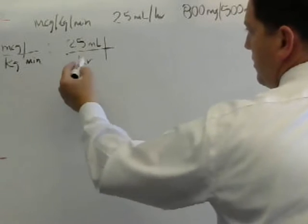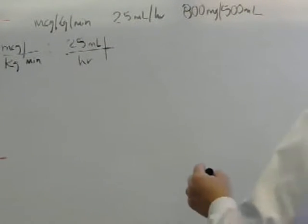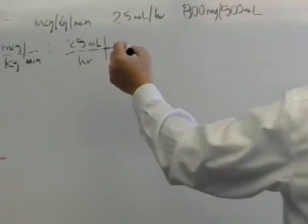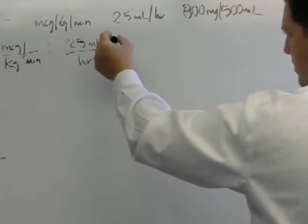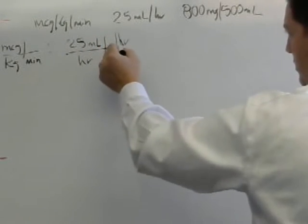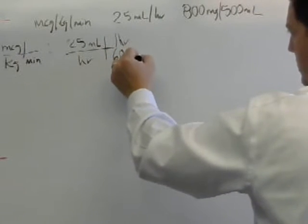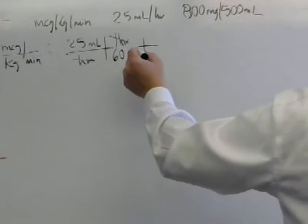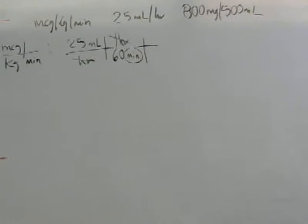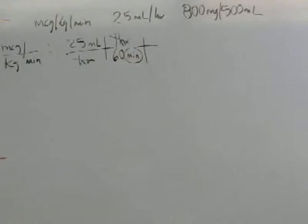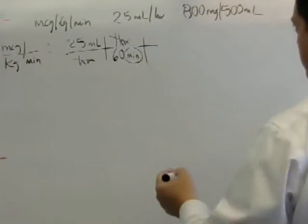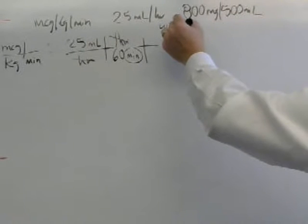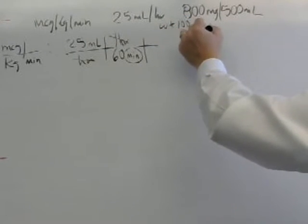So here I'm going to start solving for my time frame. So hour is not what I want. I want minutes. So I'm going to now say, well, one hour is 60 minutes. So now I can cross out those hours. I now have one of my denominators that I need. I do need a weight and I realize I didn't put the weight. The weight is a 100 kilogram patient.